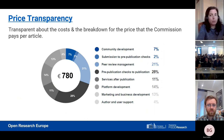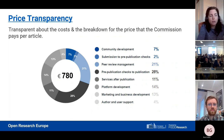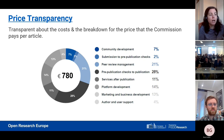Our APCs — the price that the European Commission pays per article — is 780 euros per article. Comparing with the price tag in other journals, it's quite low. We have defined eight distinct categories required for articles to be published, such as peer review management and platform development, and assigned a percentage within that 780 euros to give a clear understanding of how much goes to each category.